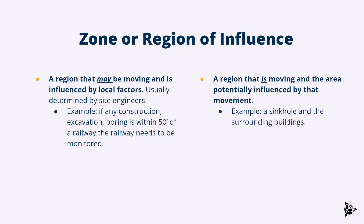A really common application is the railway application where a railway is sitting and then you have to do some excavation within 50 or 20 feet of the railway. You expect that could influence the dirt and structure holding the railway up, so you have to monitor to make sure it's not being influenced by that construction. An example of a region that is already moving is something like a sinkhole or landslide — we want to measure that earth movement as it's moving and also measure the surrounding area to see what is being influenced.